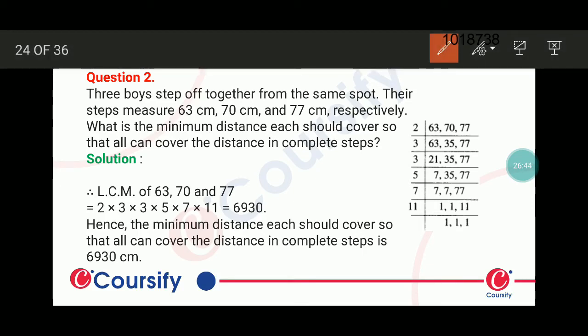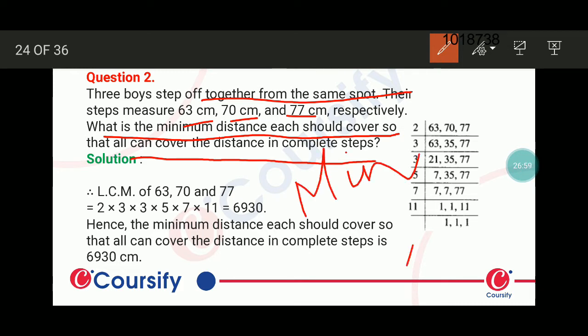Next, three boys step off together from the same spot. Their steps measure 63 cm, 70 cm, and 77 cm. What is the minimum distance each should cover so that all cover the distance in complete steps? The minimum word indicates you have to calculate LCM. So to calculate LCM, first we can make prime factors.